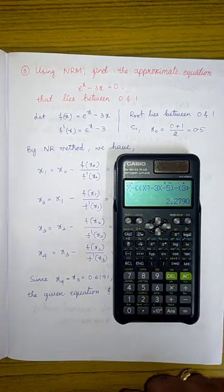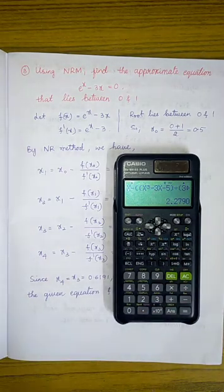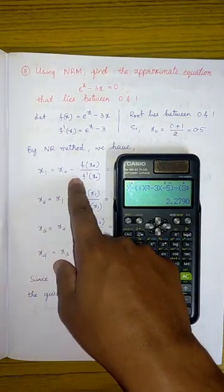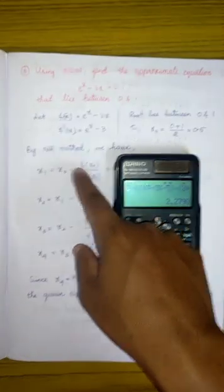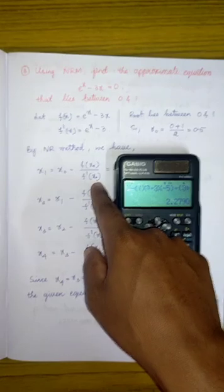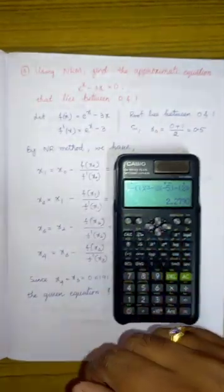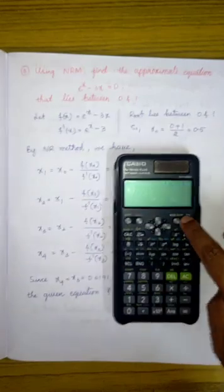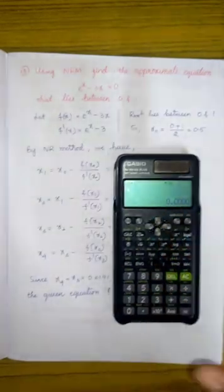Now let us calculate the first approximation by using Newton-Raphson formula. We know that x1 equals to the initial approximation minus f at initial approximation divided by f' at initial approximation. So let us do this equation now.